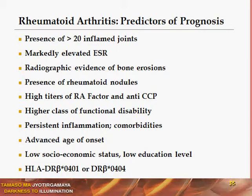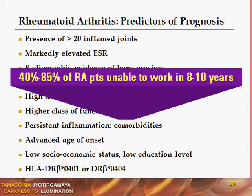What extent of patients will develop disability in rheumatoid arthritis? 40 to 85 percent of patients with rheumatoid arthritis are unable to perform their daily activities within 8 to 10 years — meaning they will end up with class 3 or class 4 disability within a decade. This is a very important point to note.